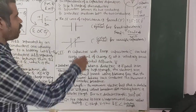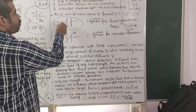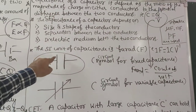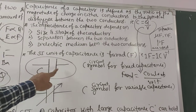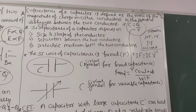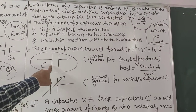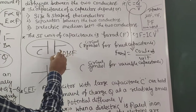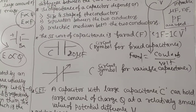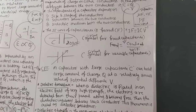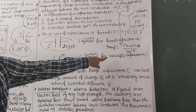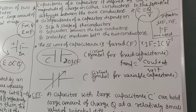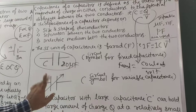The circuit symbol for a capacitor has two ends of equal height — unlike a battery where one end is larger. This symbol represents fixed capacitance, for example 20 microfarad. When we add an arrow mark to that symbol, it represents variable capacitance, where the value can be changed from 20 to 30 to 50 to 100 microfarad.